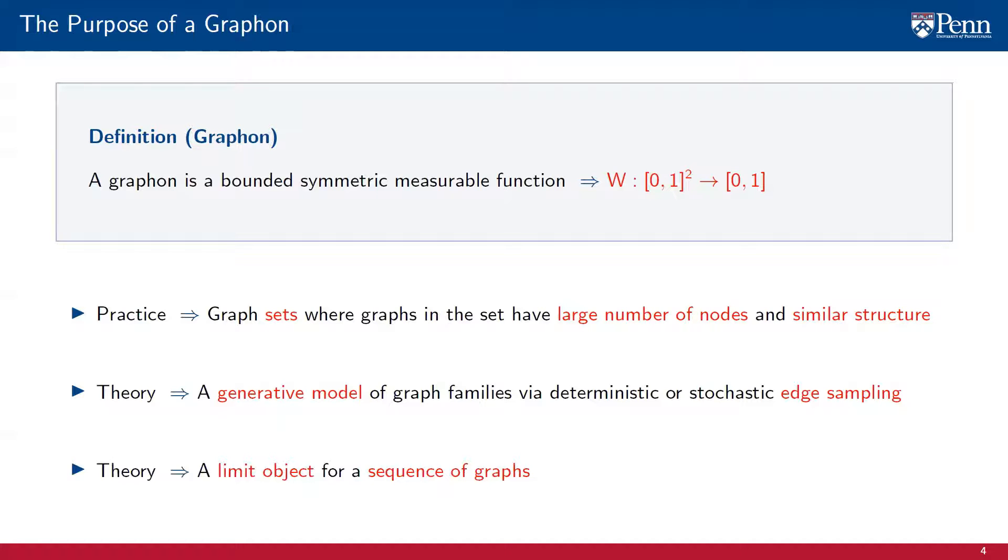Another more subtle epistemological value is that graphons are limit objects for sequences of graphs. As the number of nodes of the graph increases, it is intuitive to expect graphs to approach a limit. The graphon is this limit. Let us delve deeper into these three comments.